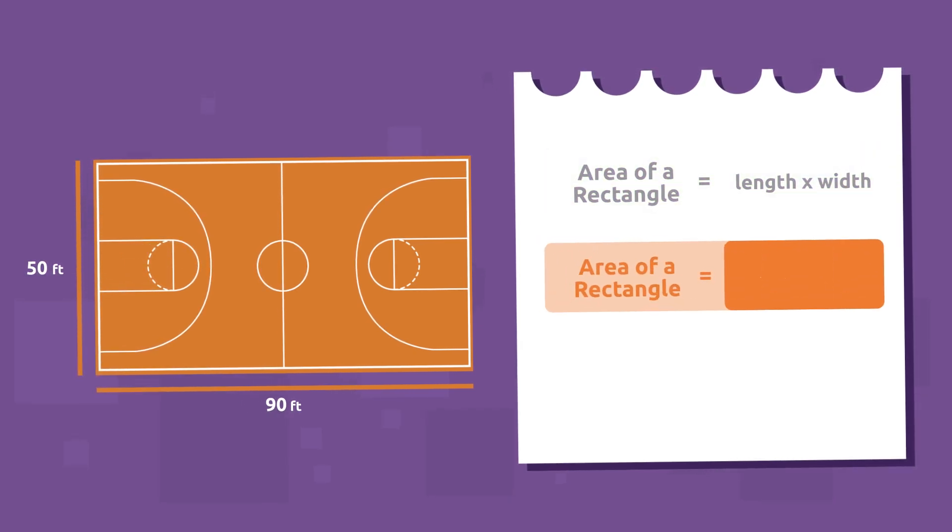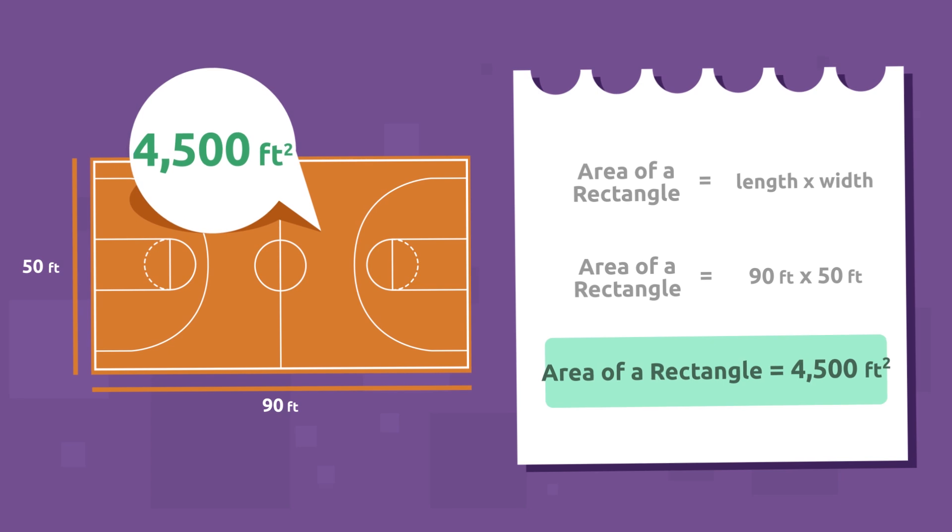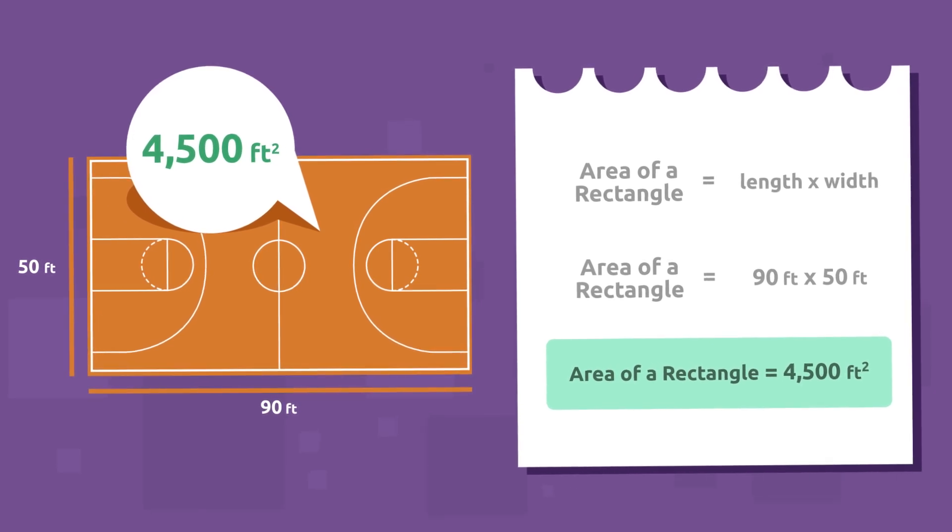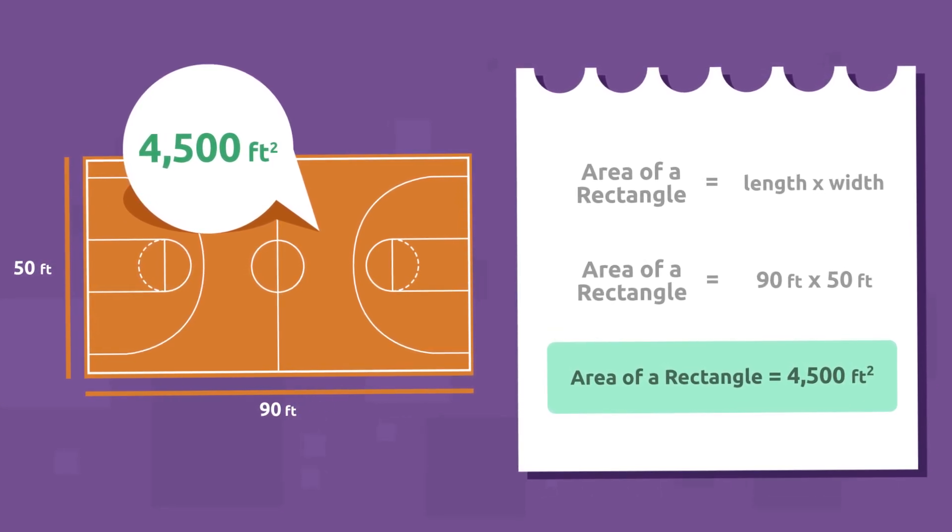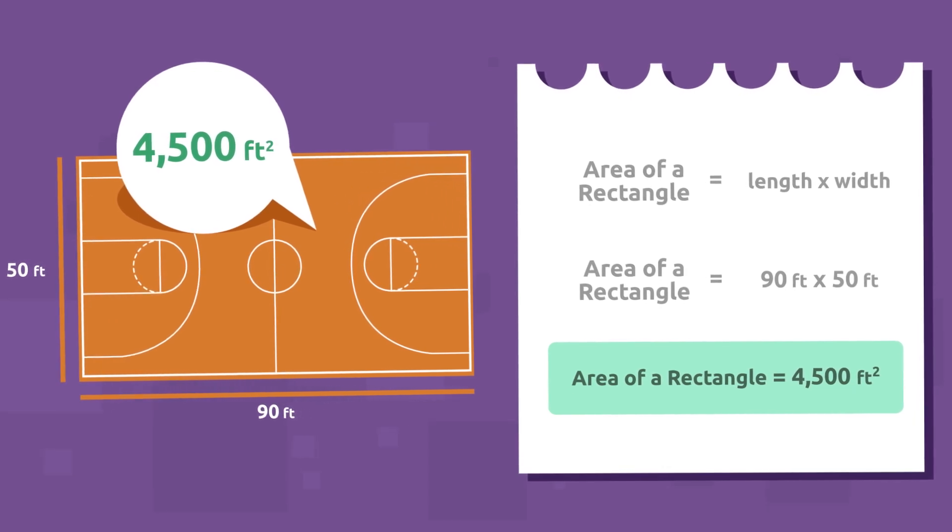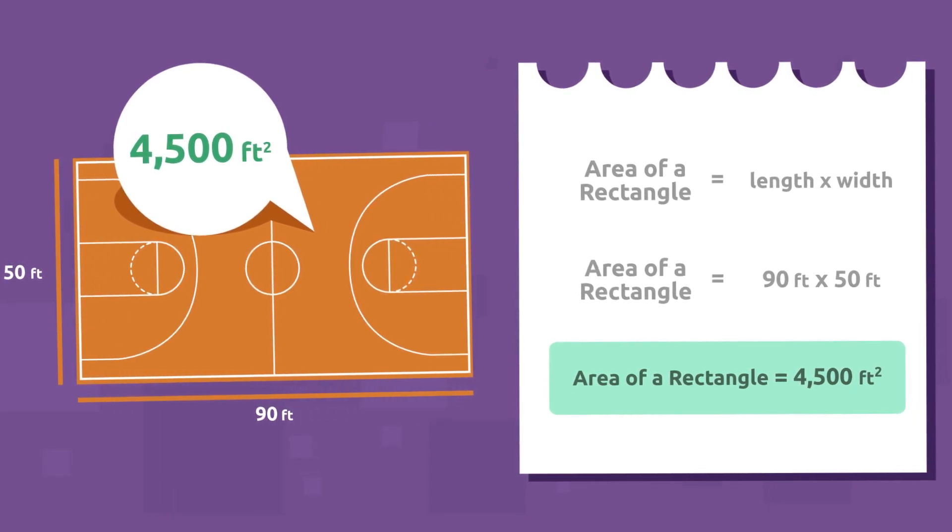Let's see, 90 times 50 equals 4,500! Great! The principal will need 4,500 square feet to build the basketball court. We're going to have so much fun!